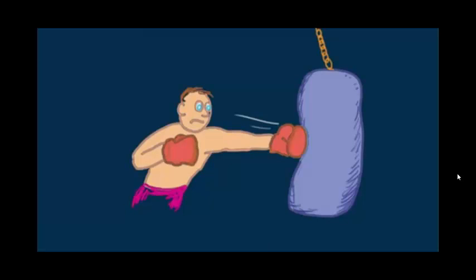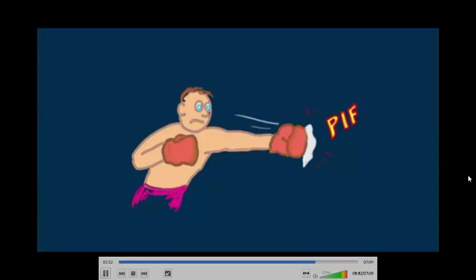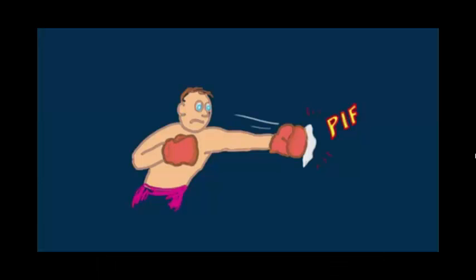Consider this boxer hitting a punching bag. He can exert a thousand pounds on a heavy bag. That's some 4500 newtons. But if he throws the same punch at a piece of tissue paper in midair, he can't hit it even with one pound. Why? Because the tissue paper isn't capable of hitting back with one pound.